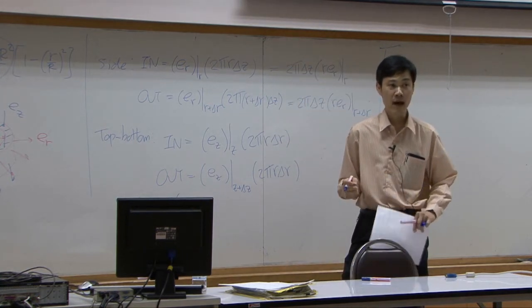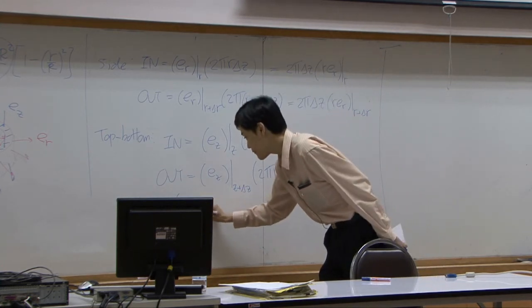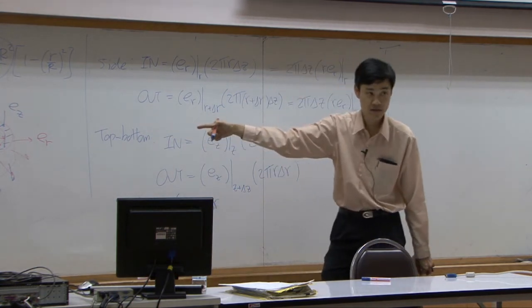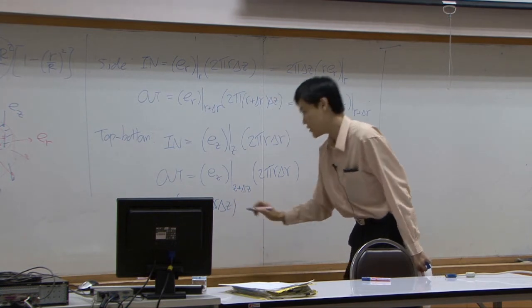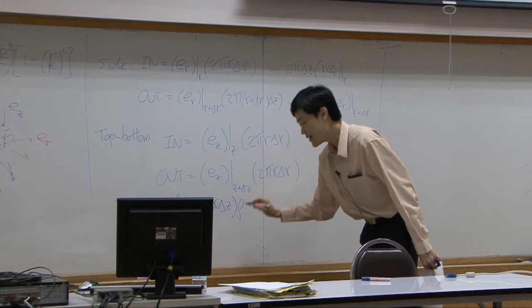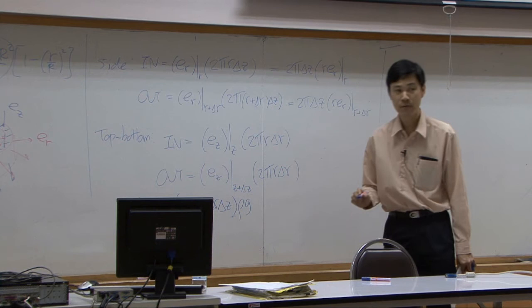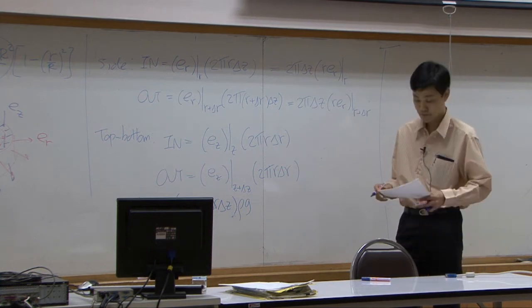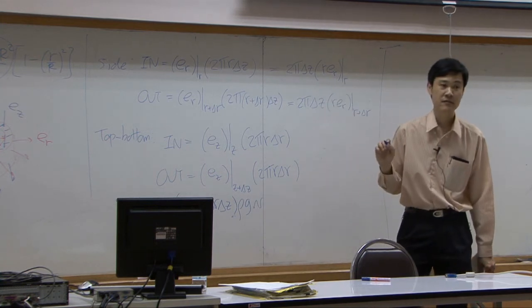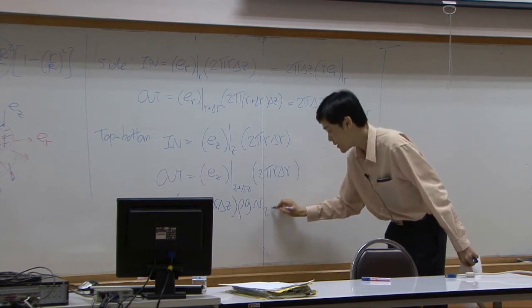2 pi r delta r delta z. You have 2 pi r delta r, which is the area highlighted, and multiplied by height delta z. That's volume. Multiplied by density, you get mass. Multiplied by g, you get force. Once you get force, you multiply by velocity. Then it turns to work.